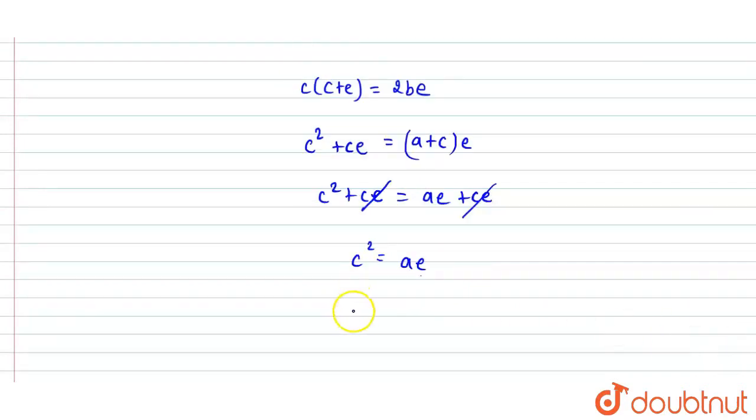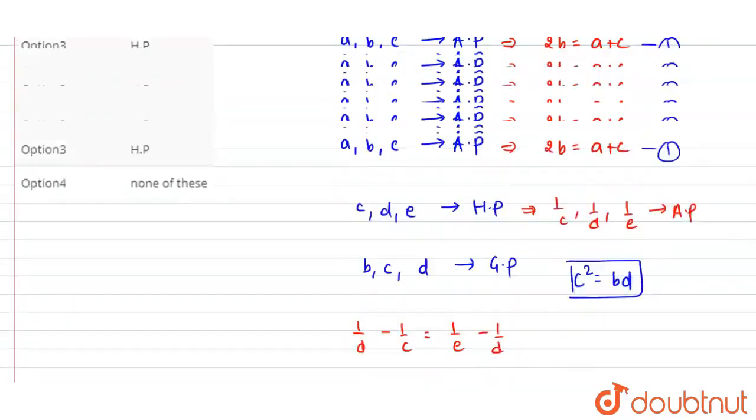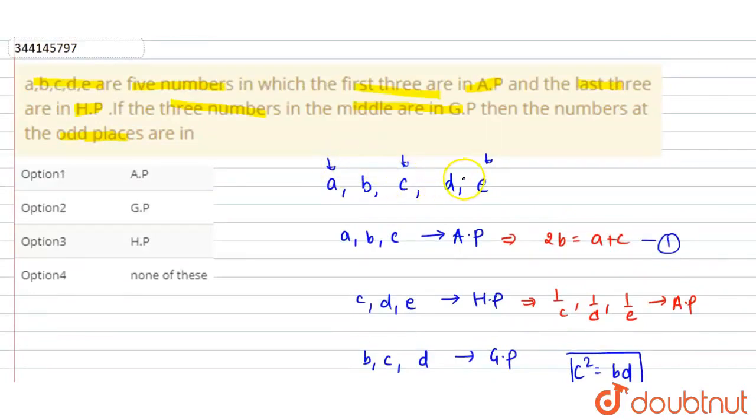When is this? A, C and E, what are these? In GP. So, ACE is in GP. And we have a relation. So our answer is GP, option number two. Hope you can understand. Thank you.